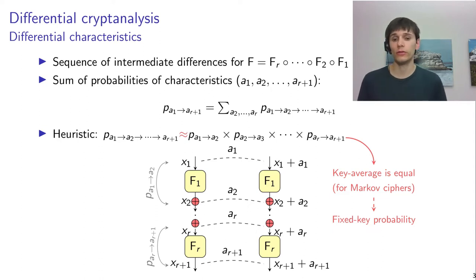And what we're going to do is specify intermediate differences. So a sequence of such intermediate differences is what we call a differential characteristic, and then the probability of your differential is the sum over the probabilities of all these differential characteristics.